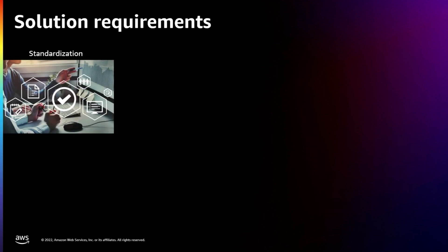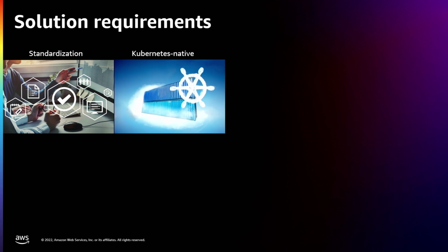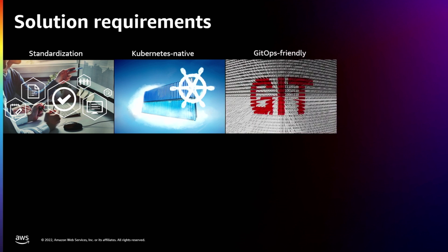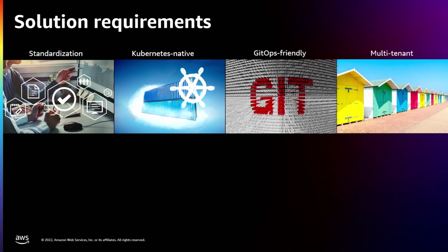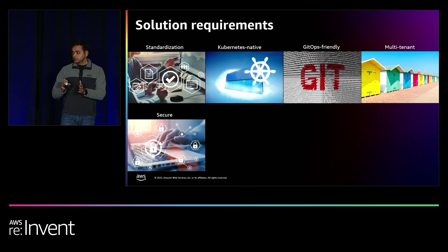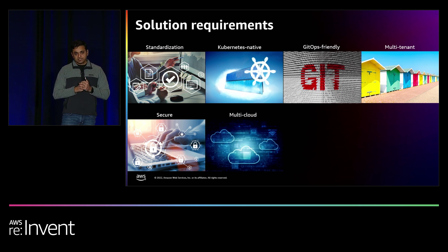We need this solution to be a standard solution for the whole of Adobe with best practices built in. The next one: our platform is based on Kubernetes, so we wanted the solution to run natively on Kubernetes. The third one: our existing CI/CD solution is based on GitHub, so we wanted infrastructure provisioning to be GitHub-friendly as well. And multi-tenancy and security — we are doing a deep dive later in this session around them, but these are very key requirements for our platform.